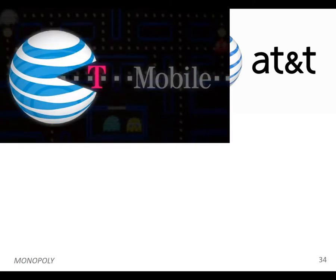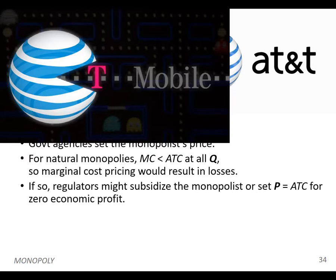Part of antitrust law is approving mergers. A number of years ago, AT&T tried to buy T-Mobile. The antitrust division of the Justice Department said no, because T-Mobile was too much of a competitor in the wireless market — they compete on price and with different strategies — and the government didn't want to lose that competition. So they do have the power to approve or disapprove of mergers.